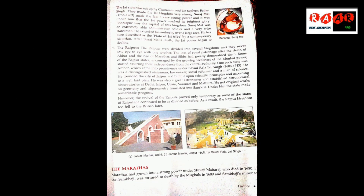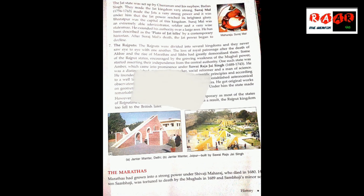Now let's talk about number 6: the Jats. The Jats were mainly agricultural people living around Delhi, Agra, and Mathura. Under the oppressive policies targeting non-Muslims during Aurangzeb's time, they were very disturbed. After Aurangzeb's death, the Jats created disturbances all around Delhi. A Jat leader named Churaman came to power and established a capital, creating the Jat state.